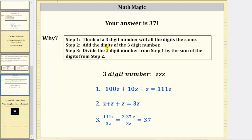Step one was to think of a three-digit number with all the digits the same. Because the digits are unknown but all the same, we could say the three-digit number has a z in the hundreds, a z in the tens, and a z in the ones.